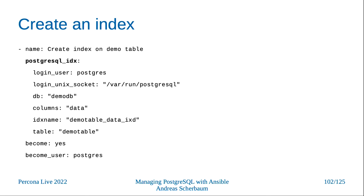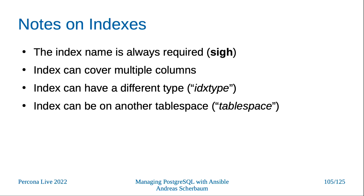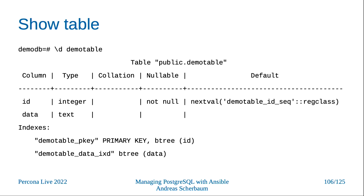In the same way we created a table, we can create an index. You specify the index name, which table, which column or columns in Postgres, and you can also specify the index method — by default it's btree, but you can have a GiST index on a specific column. Unlike in Postgres itself, in Ansible you always have to specify an index name — in Postgres, 'create index' will auto-generate an index name. Multiple columns are possible, different index types are possible, you can even create it in another tablespace.